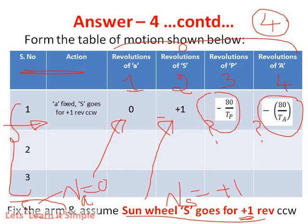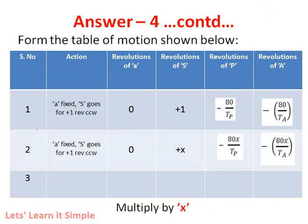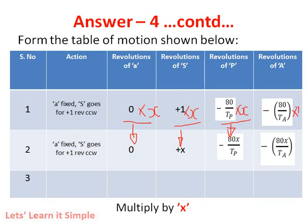The second step is to multiply each and every value by X. Multiplying: arm gives 0, sun gives +X, planet gives −80X/TP, and annulus gives −80X/TA. Note there is a correction — the sun column should be +X. The second step is very simple: multiply everything by plus X.